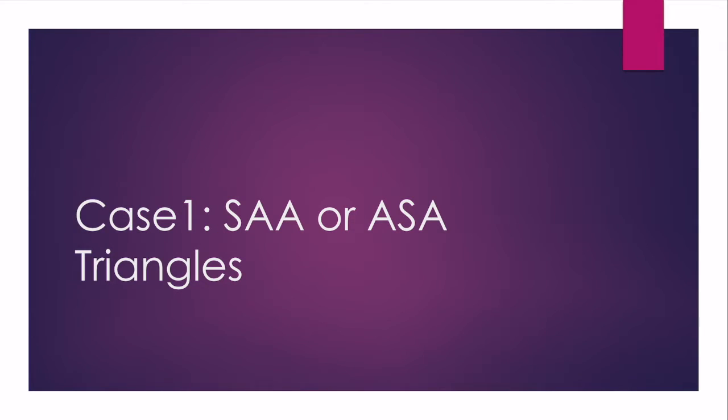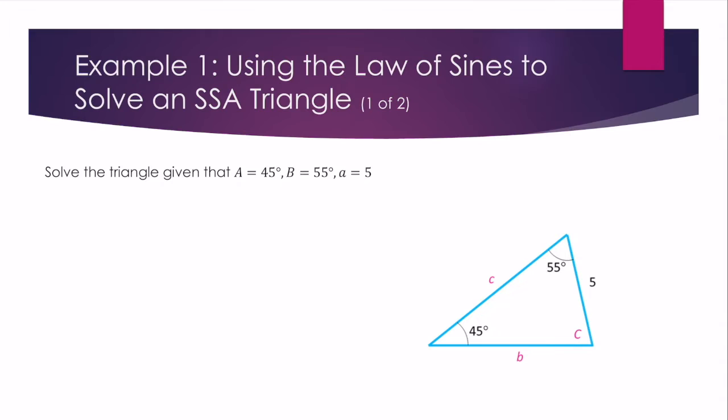So let's look at Case 1, which is side angle angle or angle side angle triangles. So let's solve this triangle given that A is 45 degrees, B is 55 degrees, and little a is 5.